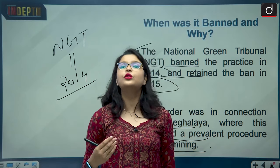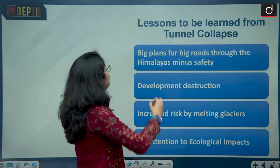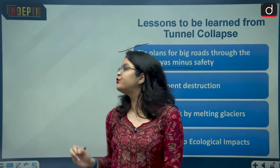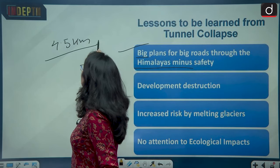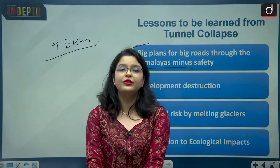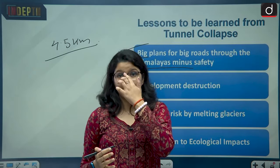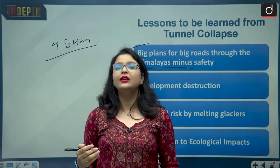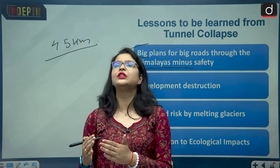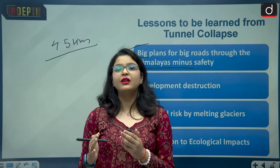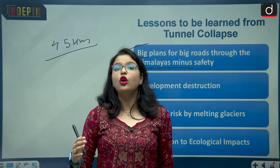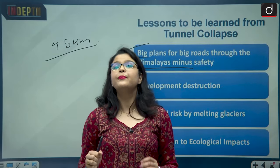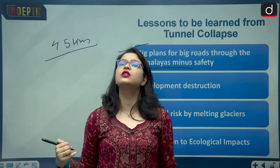Now let us discuss the lessons to be learned from this tunnel collapse. The first lesson is the pursuit of big infrastructure plans through the Himalayas without adequate safety. The Silkyara tunnel, which is 4.5 kilometers long, is part of the ambitious Char Dham Yatra project aimed at providing all-season road connectivity to the four holy places. The Himalayan region has very unstable terrain, and before planning such big development projects we need to analyze safety and security. Unfortunately, tunnel work began even before a geological survey was conducted.